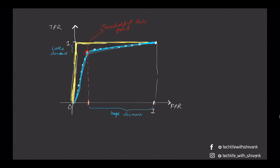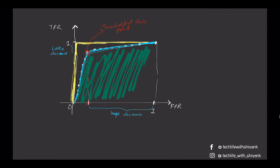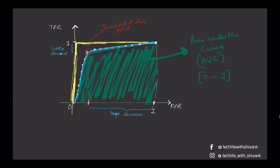We also have a measure known as Area Under the Curve, or AUC, which is the area under the ROC curve represented by the shaded green region. AUC lies between 0 and 1; for the ideal yellow line the AUC is 1. The higher the AUC, the better the model, and hence it is one of the key metrics to measure the performance of a classification model.